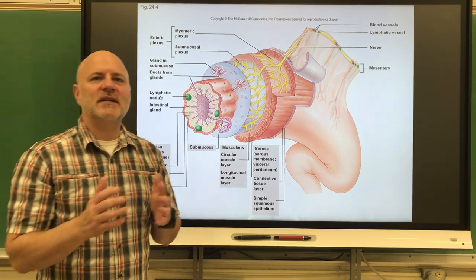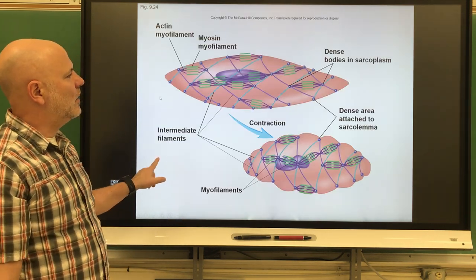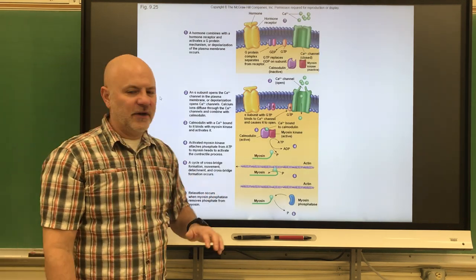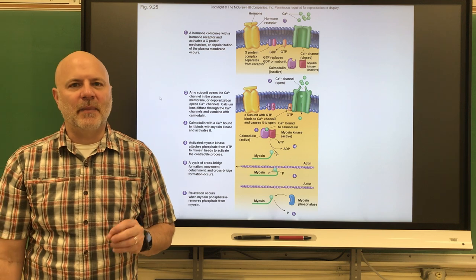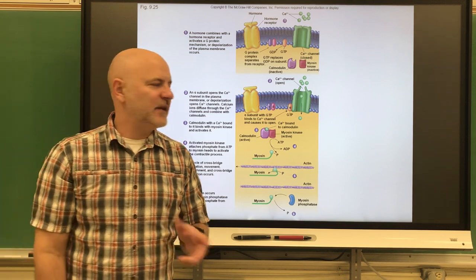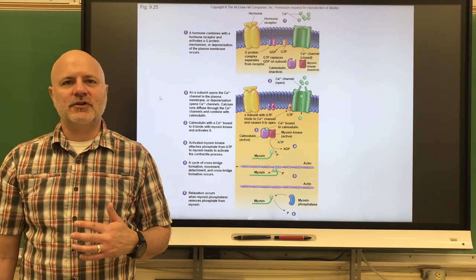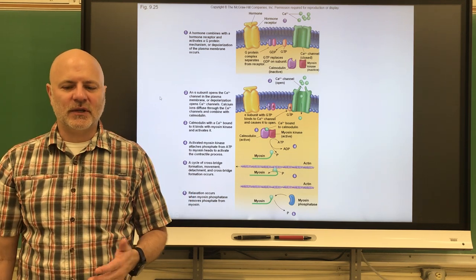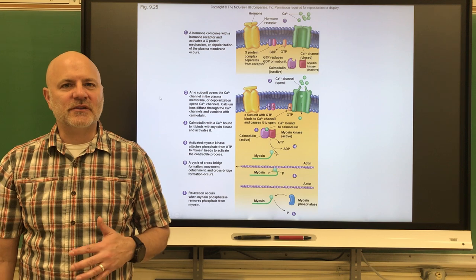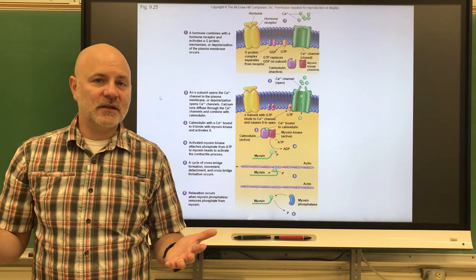Smooth muscle contraction is similar to skeletal muscle contraction but with key differences. Calcium binds to a different protein called calmodulin instead of troponin, with the same effect. Smooth muscle fibers have no Z-disc, so the contraction can shorten the muscle significantly. Smooth muscle is slower to contract and relax than skeletal muscle, but the contraction lasts longer. Smooth muscle also has a stretch-relaxation response — it contracts when stretched but will then relax due to resistance.